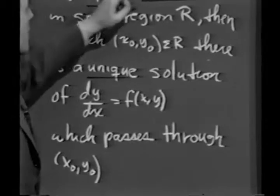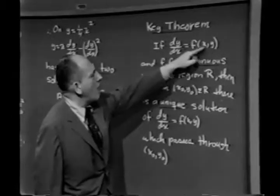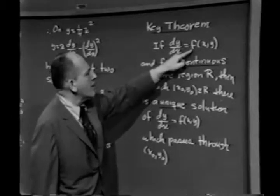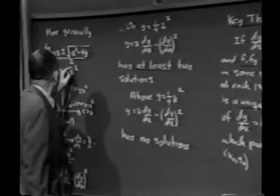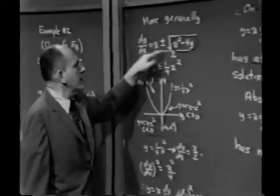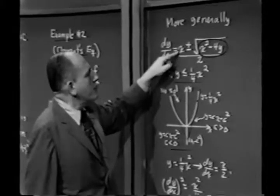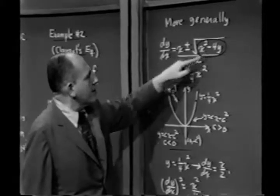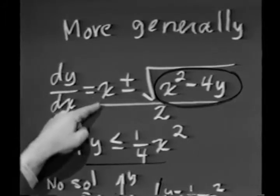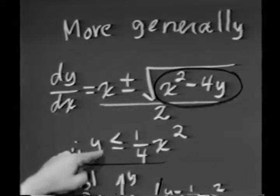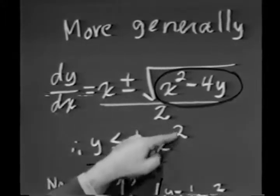Notice that in the particular problem we were just dealing with, what was f of xy? f of xy was this function here. Notice that f of xy will be continuous as long as this expression exists. In other words, f of xy will be continuous as long as y is less than or equal to 1/4 x squared.